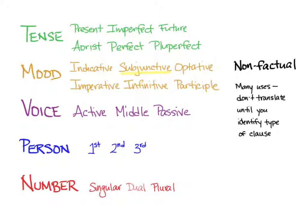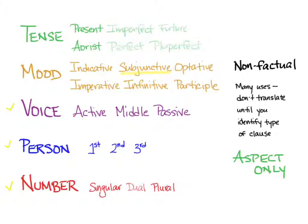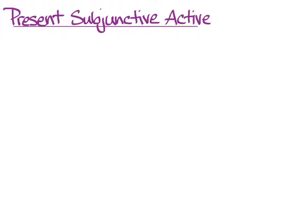The subjunctive comes in all three voices, all three persons, and all numbers. But it doesn't have imperfect, future, or pluperfect tenses. It does have perfect, but it's rare enough that we won't bother with it, so we'll only be learning present and aorist tenses. With the subjunctive, tense is only about aspect, not about time. So let's get down to how to form the present subjunctive active.